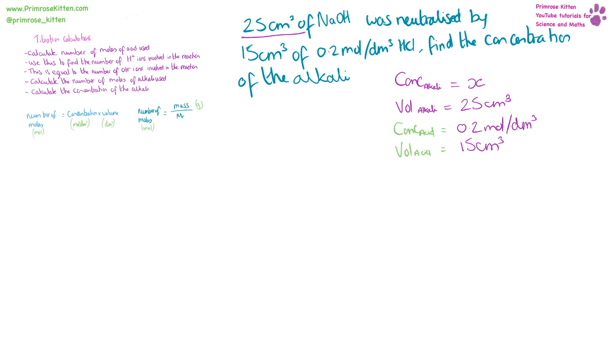So the first thing we do is calculate the number of moles of acid used. We're going to use concentration of the acid times volume of the acid. That is 0.2 times the volume of the acid, which is 15 divided by 1,000 because we need it in decimeters cubed. So 0.2 times 0.015, giving us an answer of 0.003 moles.